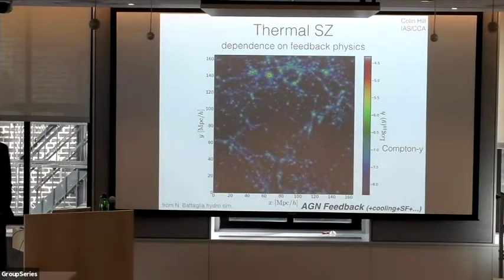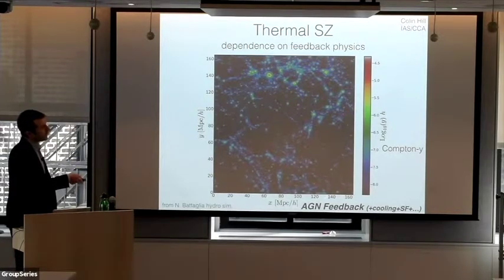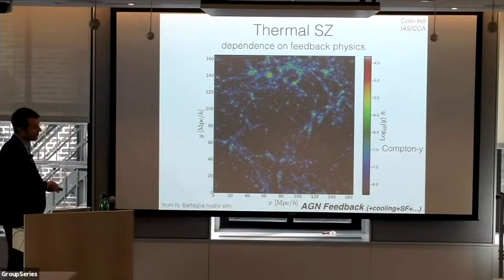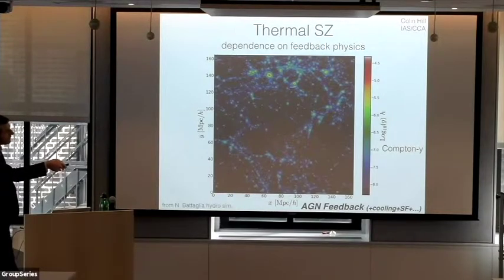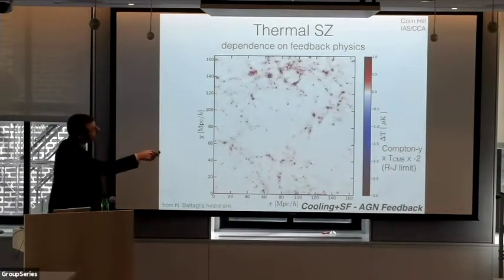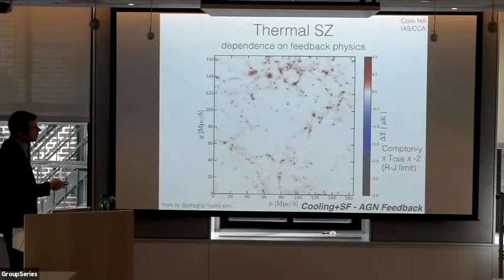Let me show you what these signals look like — a slice through a hydrodynamic simulation run by Nick Battaglia showing the Compton y-field (the thermal SZ field). The default model had AGN feedback plus radiative cooling and star formation. Now comparing to the same simulation with AGN feedback turned off: when you turn on AGN feedback, there's a lot more gas in the outskirts of the halos. In a difference map between the two, you can also see a deficit of gas in the inner regions — these blue spots inside the halos — because you've essentially evacuated the gas from the halos. This is the kind of thing we're trying to probe with the tSZ signal.